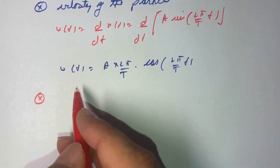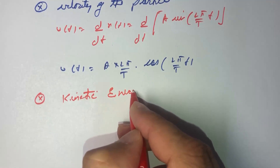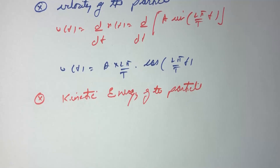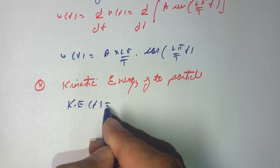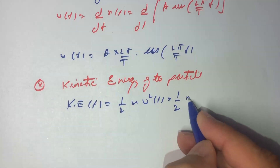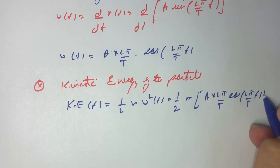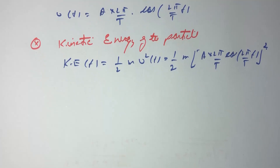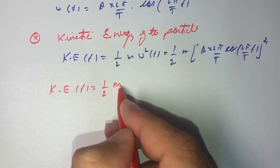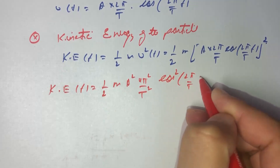Now we can find out the kinetic energy of the particle. Kinetic energy at time t equals half·m·v². Substituting the value of velocity, we get KE = ½·m·A²·(4π²/T²)·cos²(2πt/T).